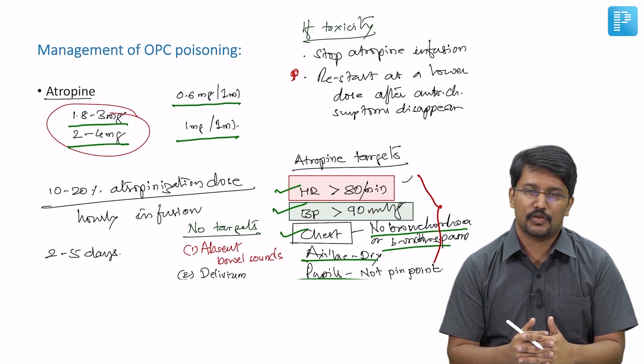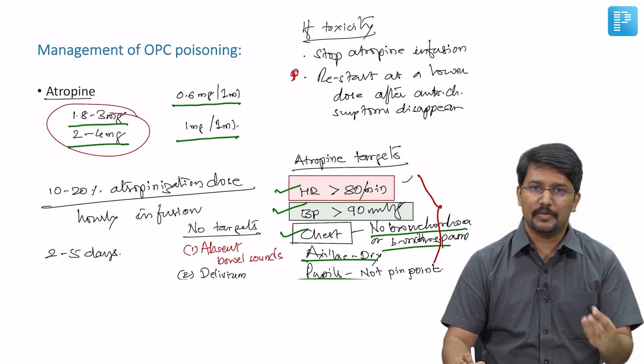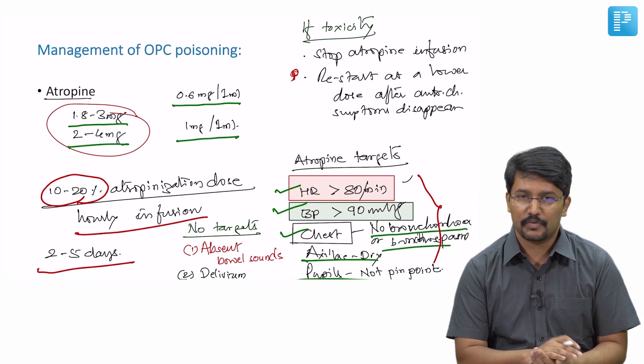Maintenance dose needs to be offered for at least two to three days for all patients who had evidence of organophosphate poisoning. Once we have achieved the atropine targets, whatever dose it took for us to achieve the atropine targets, 20% of that dose should be used as hourly infusion. We might have to give them for two to five days of maintenance atropine therapy.